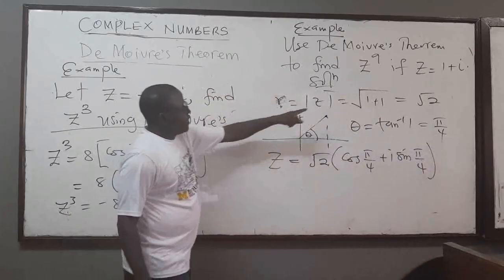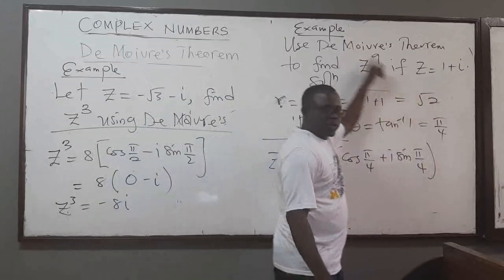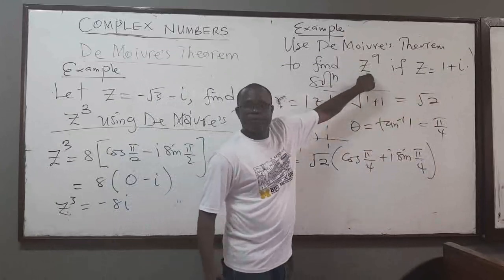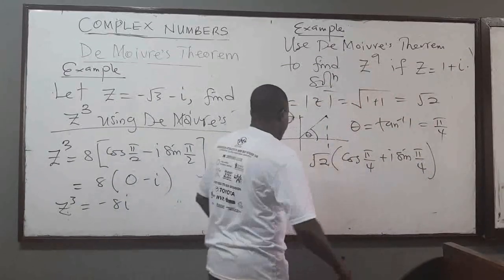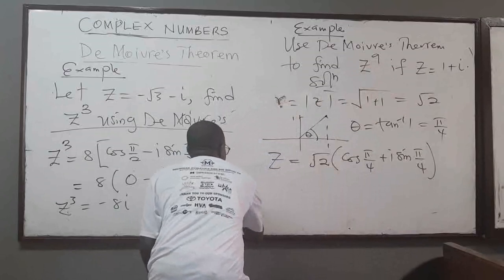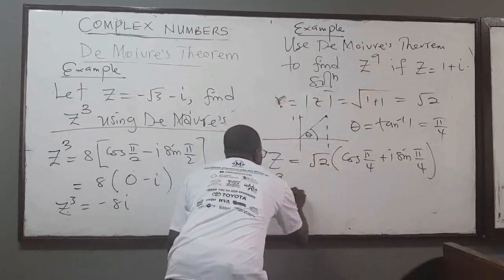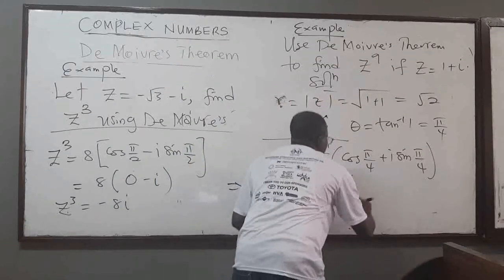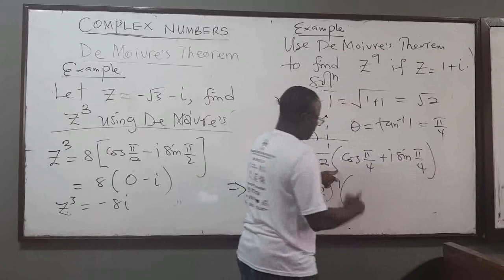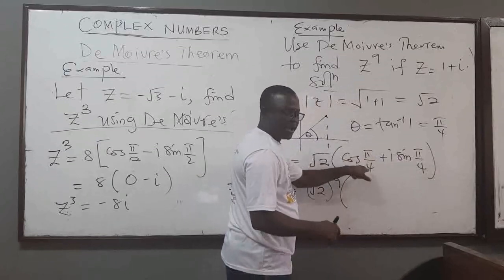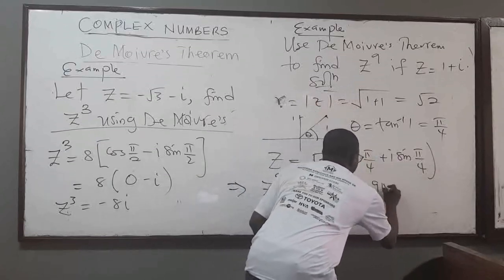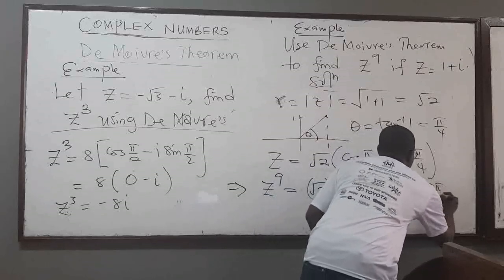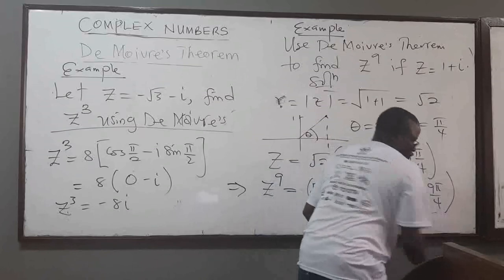We are given the complex number in standard form, we turned it into polar form. Now we can find z to the power 9. So z raised to the power 9 equals (√2)^9 times (cos(π/4) + i·sin(π/4)) raised to the power 9, giving (√2)^9 · (cos(9π/4) + i·sin(9π/4)).